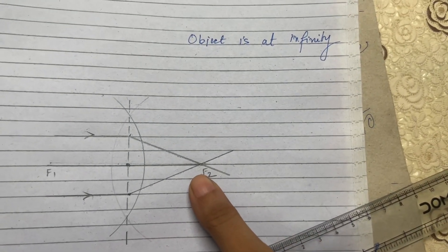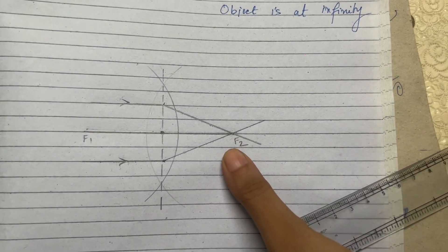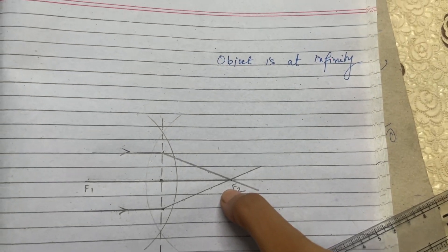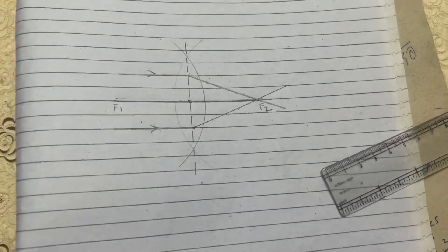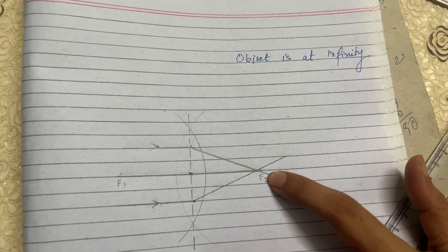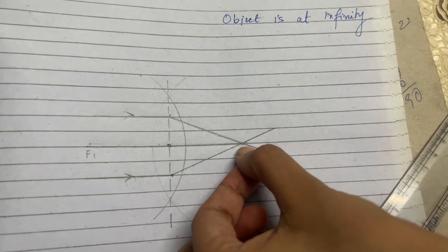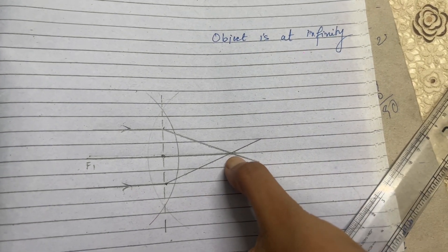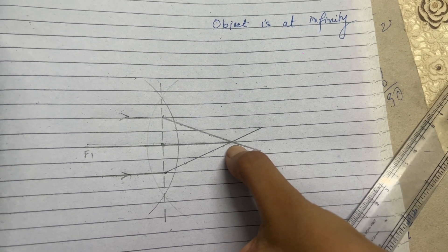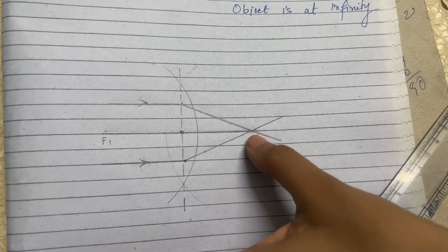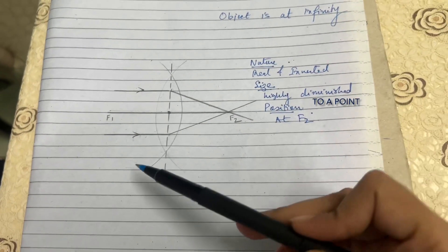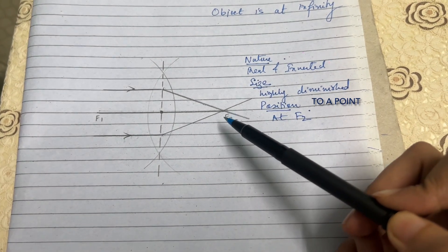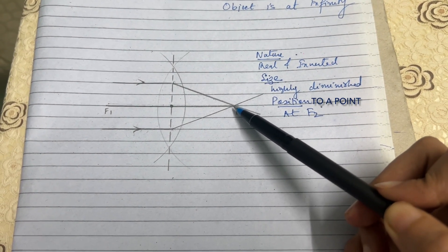So if the object is at infinity, both rays will pass through the focus and the image formed would obviously be a real image because they are actually meeting. The image is highly diminished to a point, and since it's real, it will be inverted. So when the object is at infinity, the nature will be real and inverted, and it is highly diminished to a point.